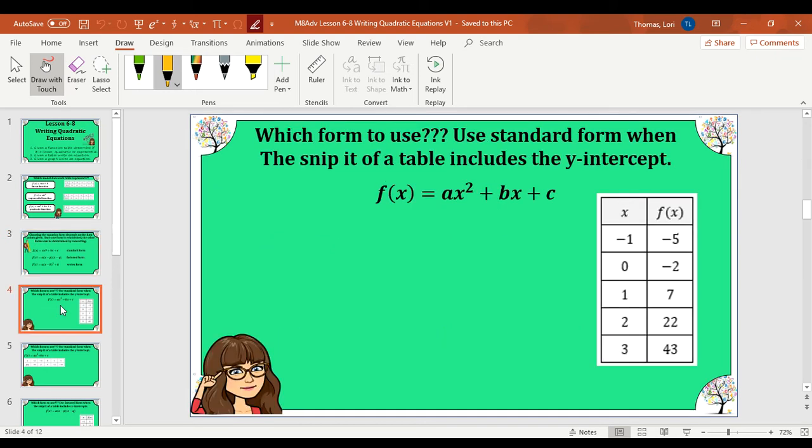So we're going to take a look at when you use standard form. And if you need to pause this video at any time, please do so. We're going to take a look at a function table. I'm going to tell you two things to look for to know to use the standard form to create our equation. First of all, you have to be given the input values in sequential order: negative 1, 0, 1, 2, 3. There's no gaps, they're in order. And you are given the y-intercept. So we know we have the y-intercept is 0, negative 2.